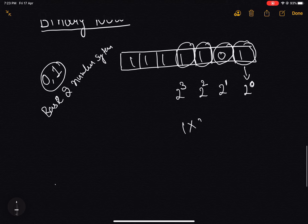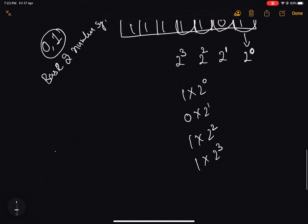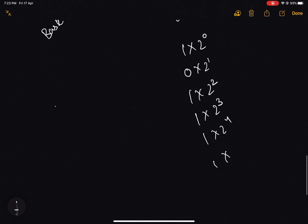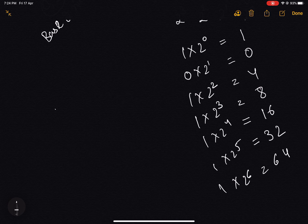1 times 2 to the power 0, 0 times 2 to the power 1, 1 times 2 squared, 1 times 2 to the power 3, 1 times 2 to the power 4, 1 times 2 to the power 5, and 1 times 2 to the power 6. So this is basically 1, 0, 4, 8, 16, 32, 64.